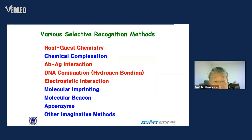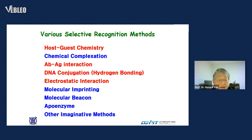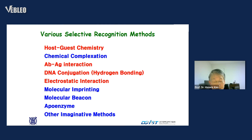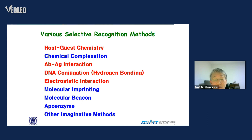There are various selective recognition methods: host-guest chemistry, chemical complexation, antigen-antibody interaction, DNA conjugation, electrostatic interaction, molecular imprinting, molecular beacon, apoenzyme, and other imaginative methods. I'm going to briefly introduce four different categories, colored in red.